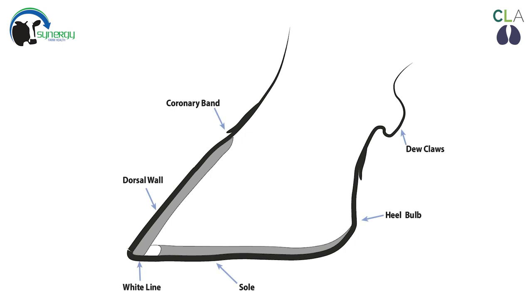The dorsal wall and sole are made of horn which join together at the white line to form the hoof capsule. The coronary band marks the join between the hoof capsule and the skin.